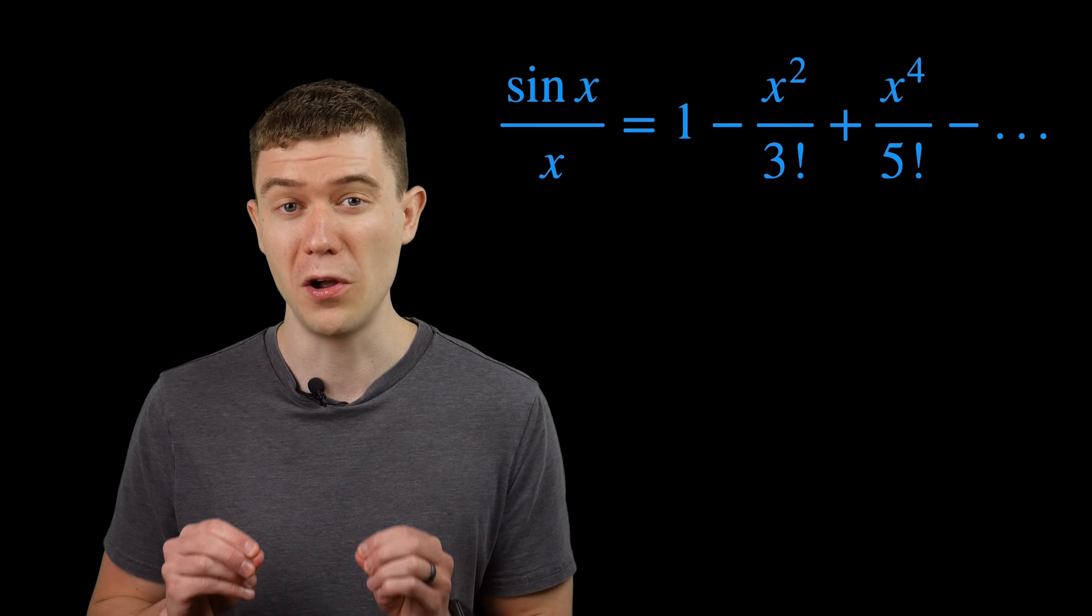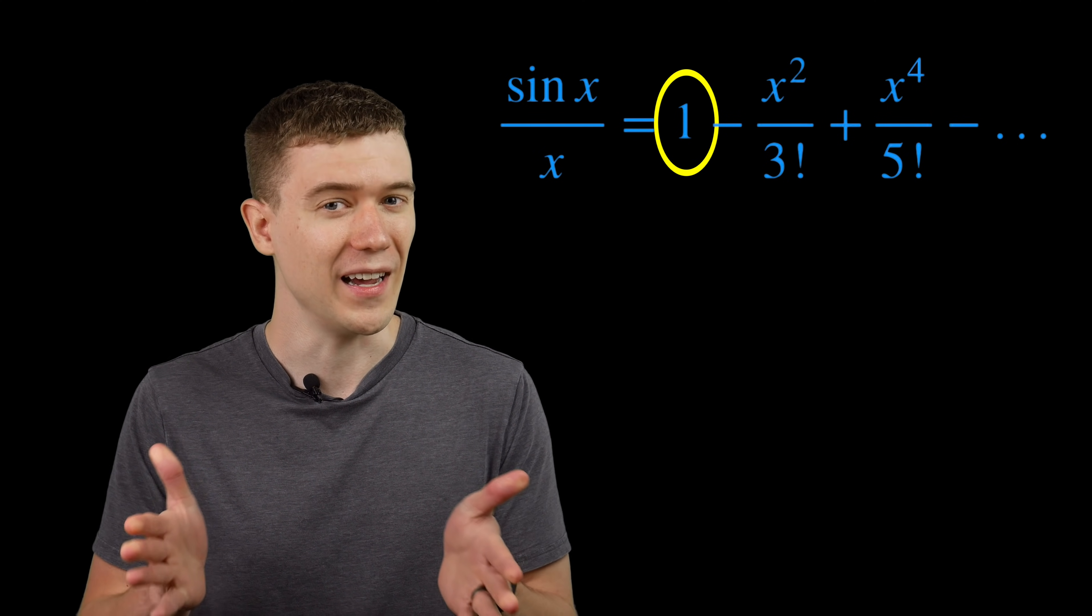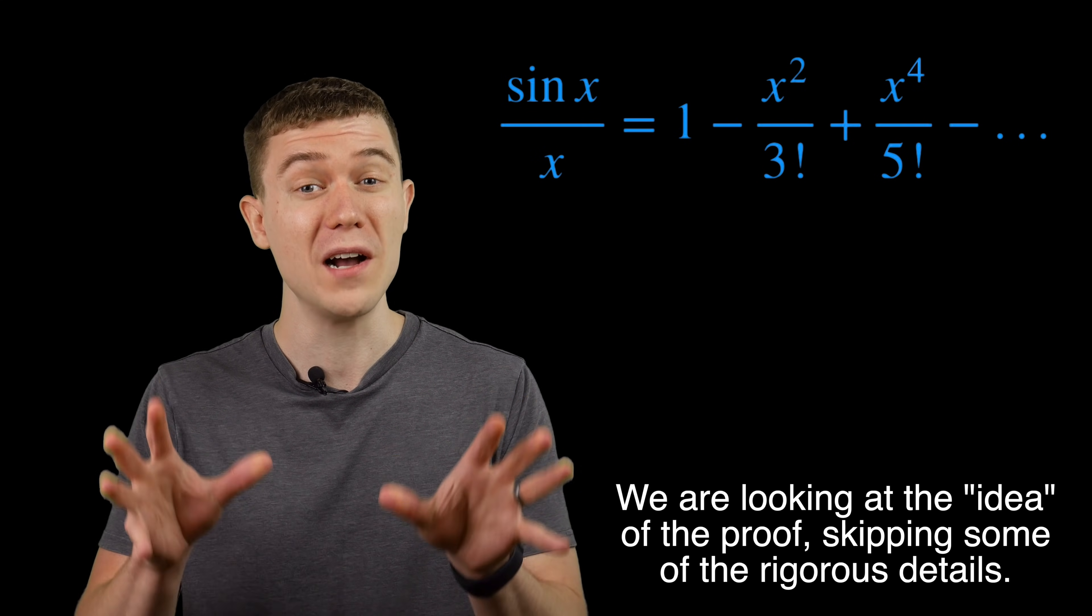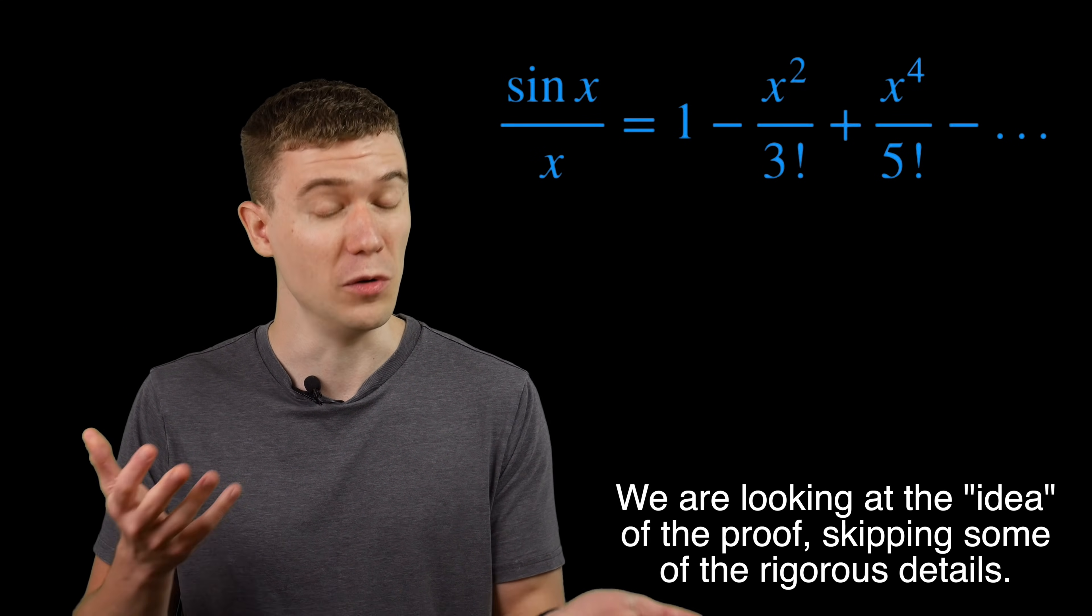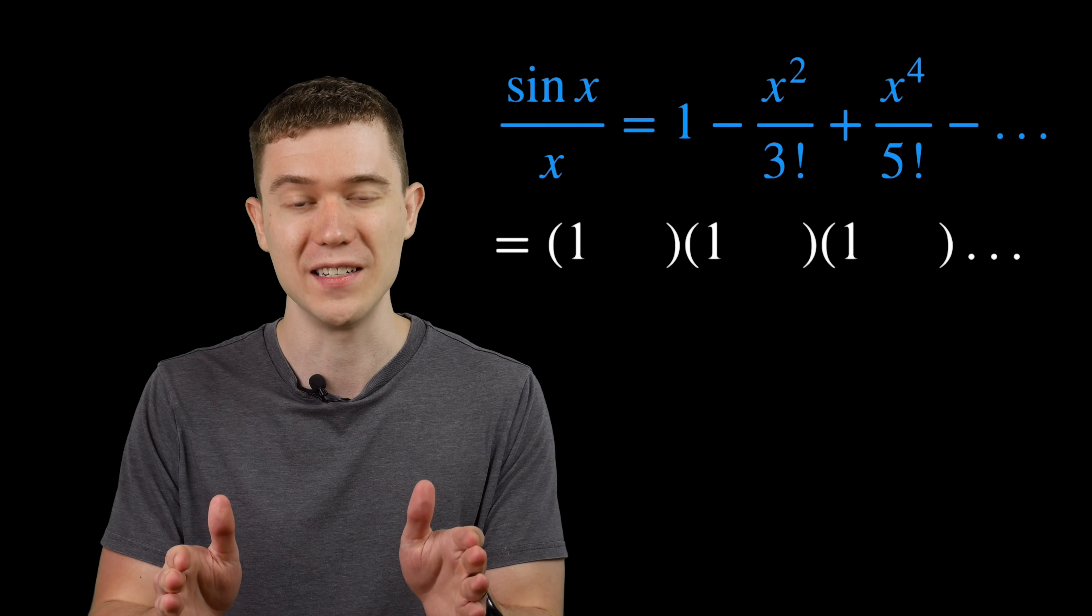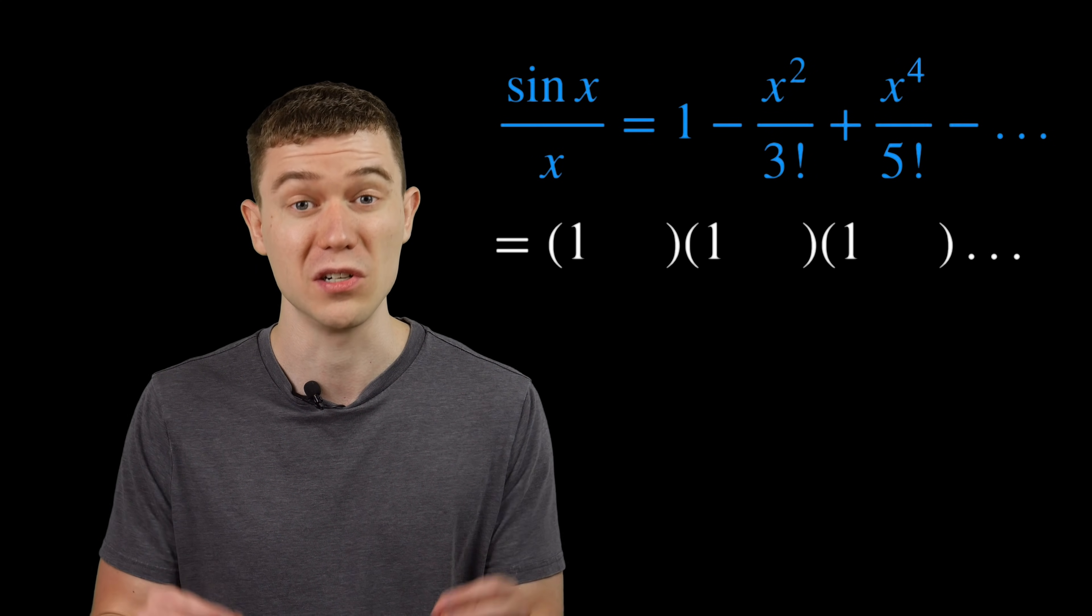The constant term of our polynomial is 1, and it's an infinite polynomial, so the numbers here all have to multiply to 1. The only way that that's going to work, unless we want to use a bunch of fractions, is to make all the constant terms in the linear factors 1.